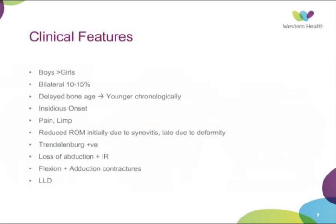Clinical features: boys are affected more than girls. It has an insidious onset, typically presenting with pain and a limp in childhood. There is reduced range of motion initially due to synovitis, which precedes the deformity that gives rise to later reduced mobility. Trendelenburg sign may be positive. There is likely loss of adduction and internal rotation with flexion and adduction contractures, and a leg length discrepancy as well.